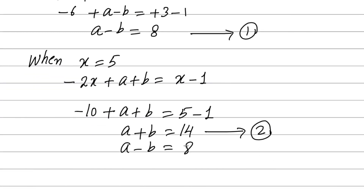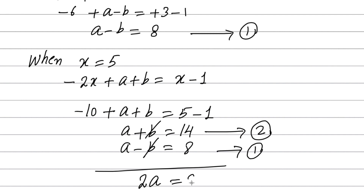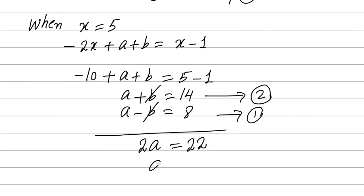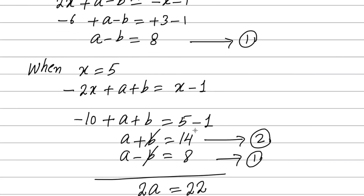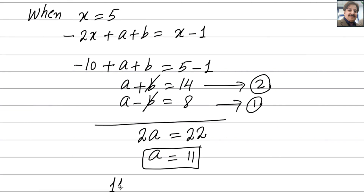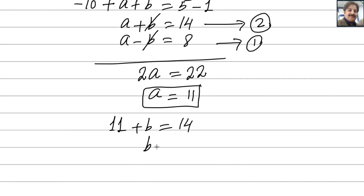Adding the two equations: a minus b equals 8 and a plus b equals 14. The b terms cancel, giving 2a equals 22, so a equals 11. Substituting a equals 11 into equation two: 11 plus b equals 14, giving b equals 3. So the final answers are a equals 11 and b equals 3.